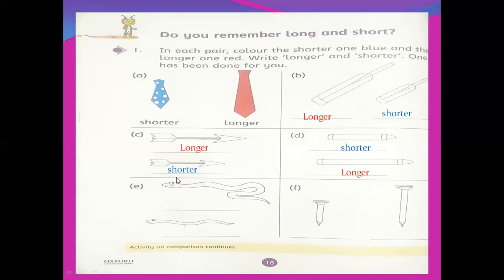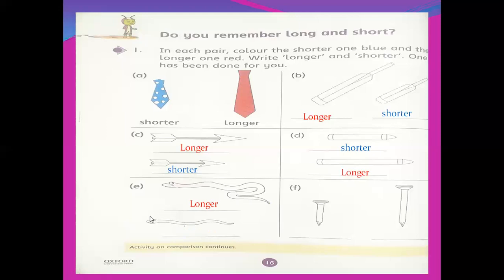Part E — which one is the longer? This one. The first one is the longer — write 'longer' and color red. This is the red color snake. And number two is the shorter — write 'shorter' and color blue.